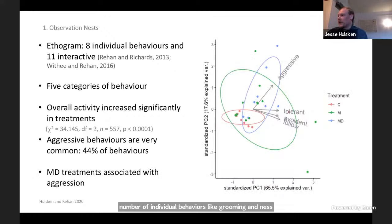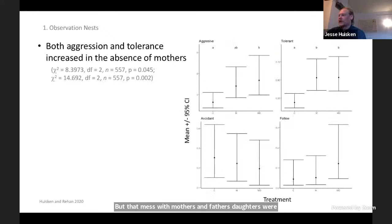Next, we constructed a PCA to look at the effect of our treatments on overall interactive behavioral categories. We found considerable overlap between nests among treatments, but nests with mothers and dwarf eldest daughters were associated more strongly with aggressive behaviors. We then constructed general linear models with Poisson and negative binomial distributions to look at particular behavioral categories. Aggressive behaviors increase under removal treatments, but only significantly so when mothers and dwarf eldest daughters were removed. Tolerant behaviors increased as well under both removal treatments. We found no difference in avoidant and following behaviors between treatments.